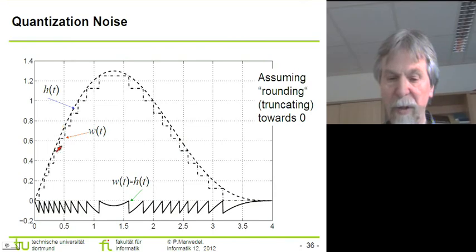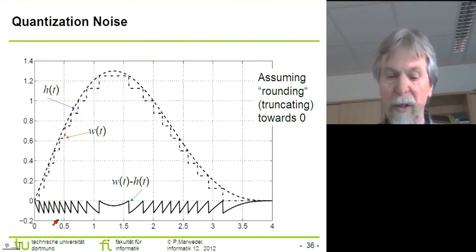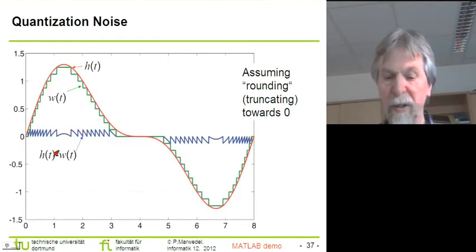So this is the so-called quantization noise, and what we are representing in the computer is a signal that can be explained as a signal resulting from adding this signal down here to the original dashed line over there. And as a result, we will be obtaining the step function over here.